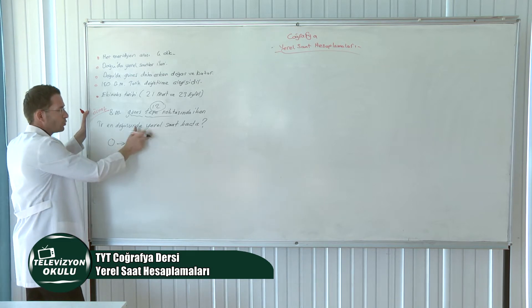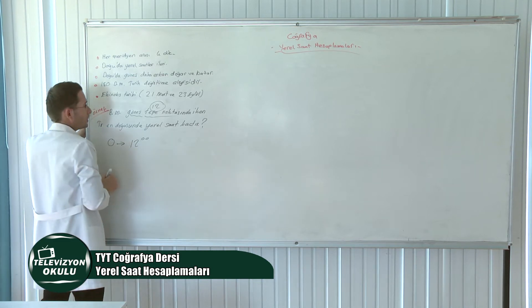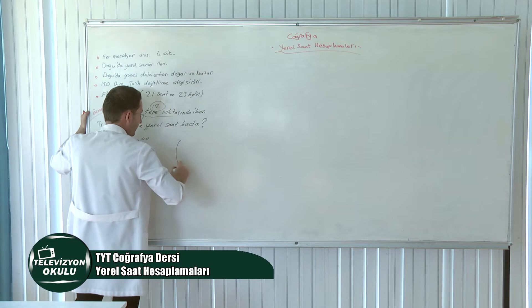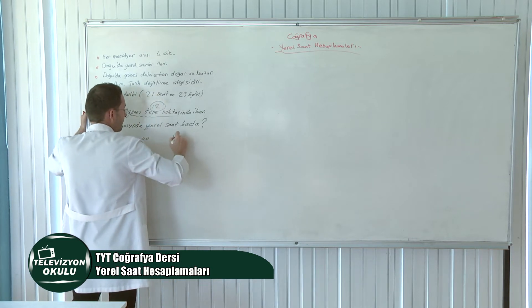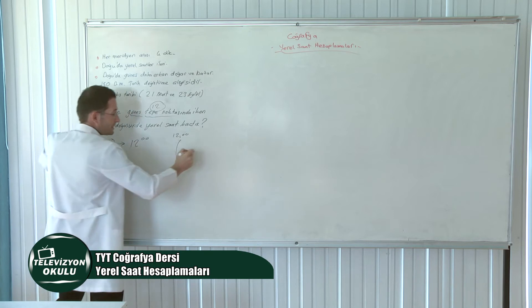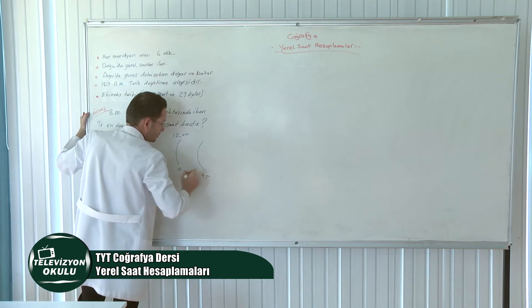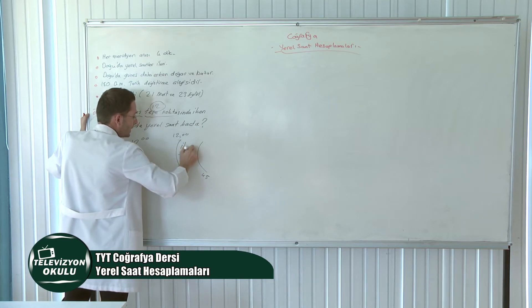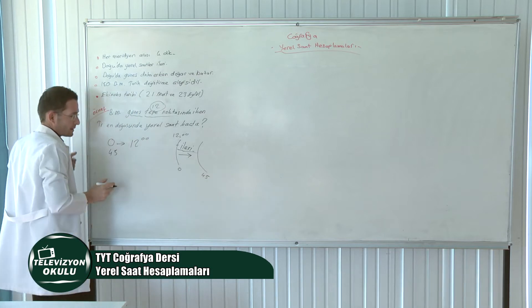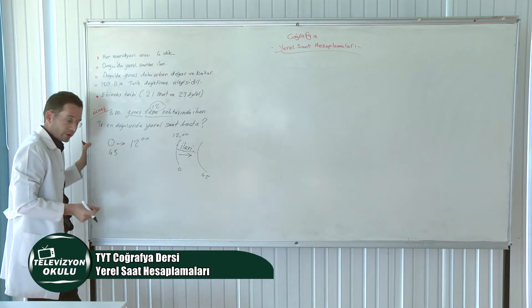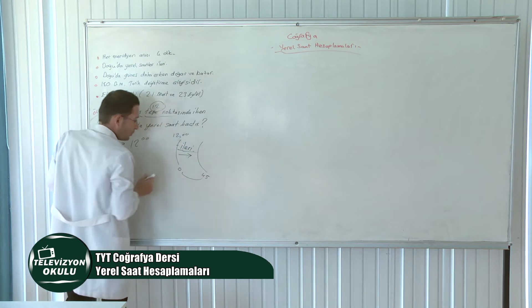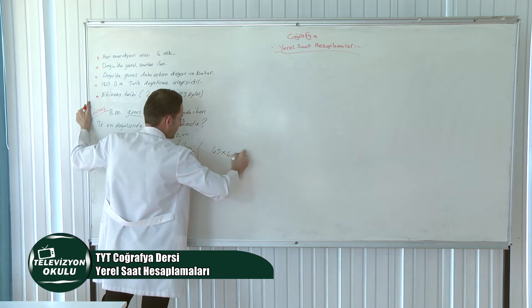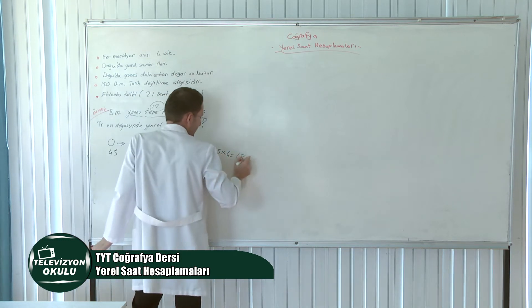Türkiye'nin en doğusundan geçen boylam kaçtır? 45. Doğu meridyenini soruyor. Başlangıç meridyeninde saatimiz 12.00, bizden 45. Doğu meridyeni isteniyor. Doğuya doğru gittiğimiz için yerel saat ileri olacak. Her meridyen arası 4 dakika, arada 45 boylam fark var. 45 çarpı 4 eşittir 180 dakika.